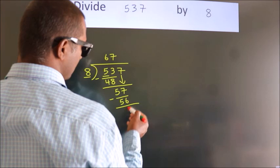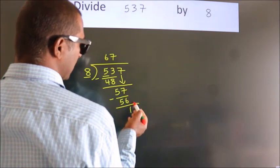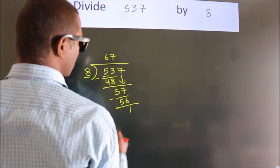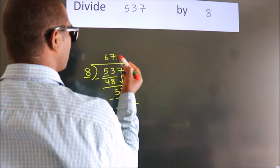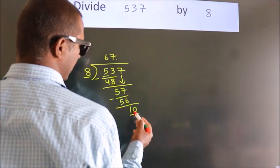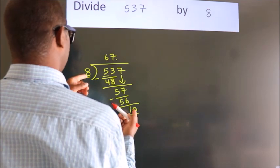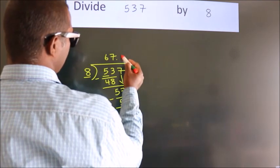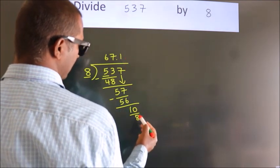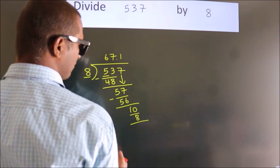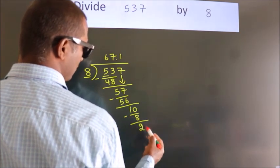After this, no more numbers to bring down. Now, what we do is we put a dot and take 0. So, 10. A number close to 10 in the 8 table is 8 times 1 equals 8. Now we subtract. We get 2.